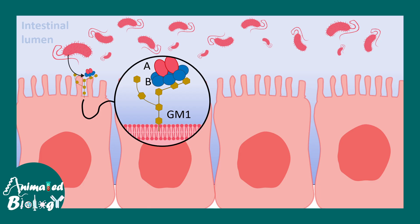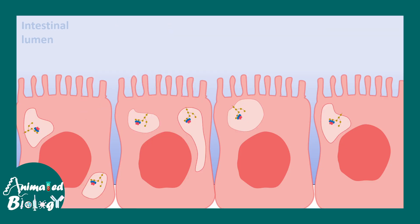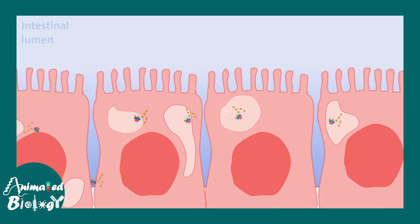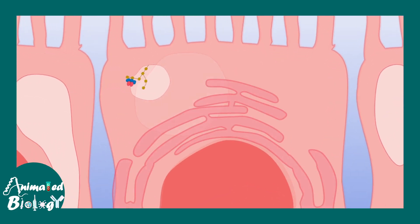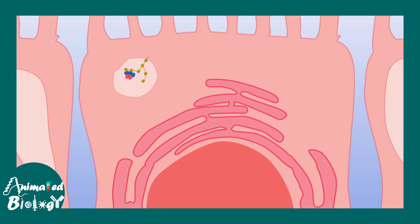The B portion of the toxin allows it to bind to the GM1 receptor. After binding, there is receptor-mediated endocytosis which takes the toxin inside the intestinal cells. Then the A part of the toxin gets released in the cytoplasm, where it modifies the G protein-coupled receptor responses.